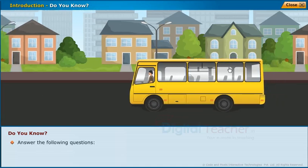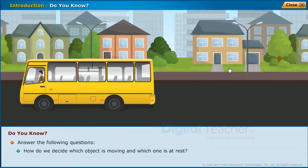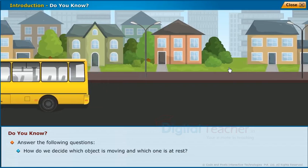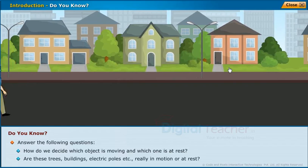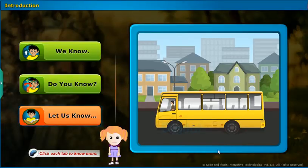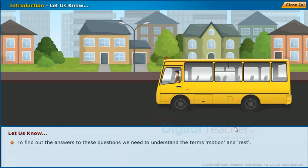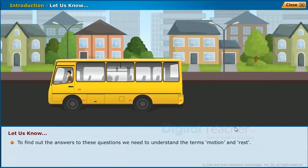Answer the following questions: How do we decide which object is moving and which one is at rest? Are these trees, buildings, electric poles really in motion or at rest? To find out the answers to these questions, we need to understand the terms motion and rest.